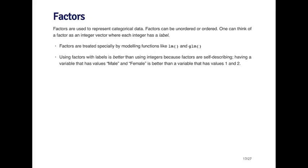You can think of a factor as an integer vector where each integer has a label. For example, you can think of it as a vector of one, two, three, where one represents a high value, two represents a medium value, and three represents a low value. So you might have a variable called high, medium, and low, and underlying in R it's represented by the numbers one, two, and three.